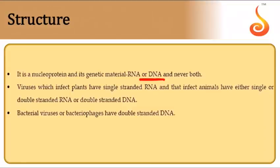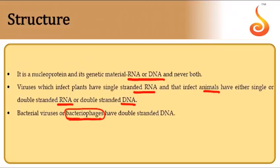Viruses have DNA or RNA in their central core. Most plant viruses have single-stranded RNA. Animal viruses may have single or double-stranded RNA or DNA. Plant viruses are called phytophages, animal viruses are called zoophages, and bacterial viruses are called bacteriophages, which have double-stranded DNA as their genetic material.